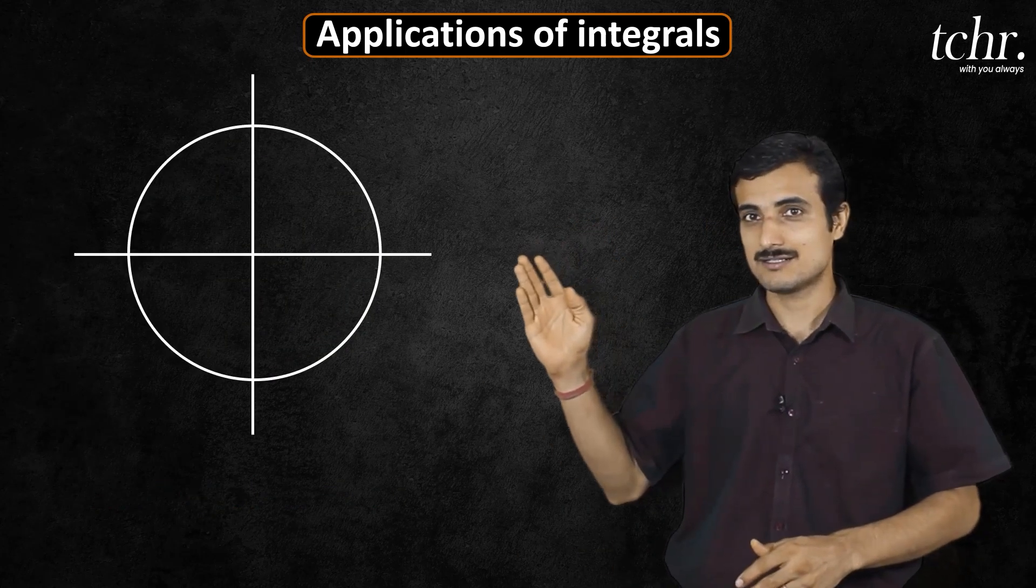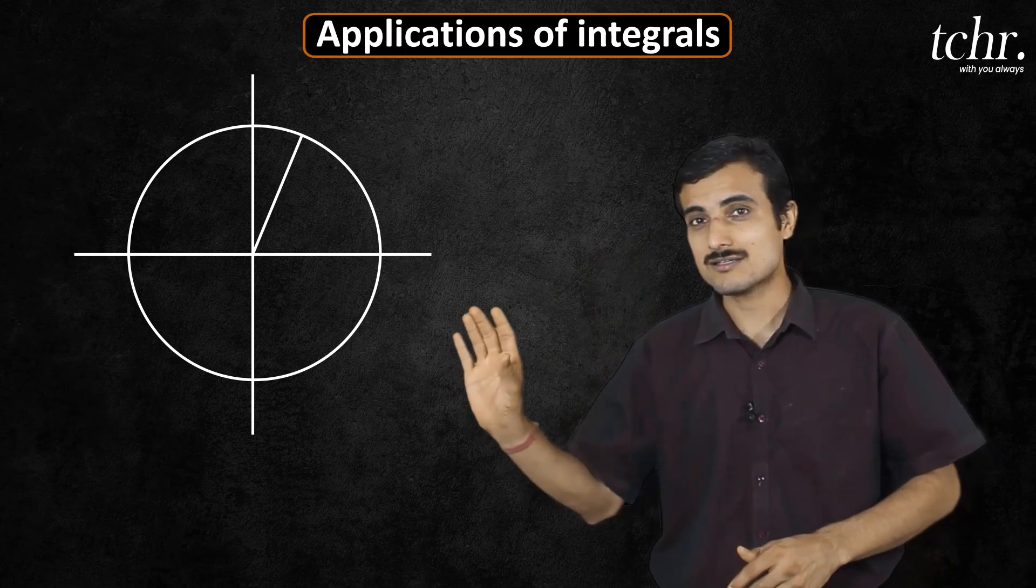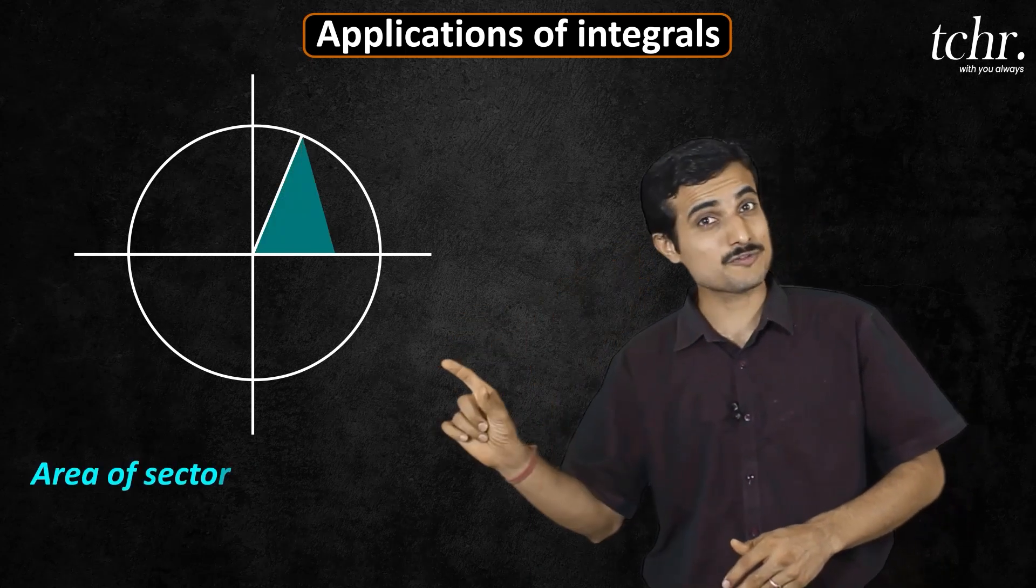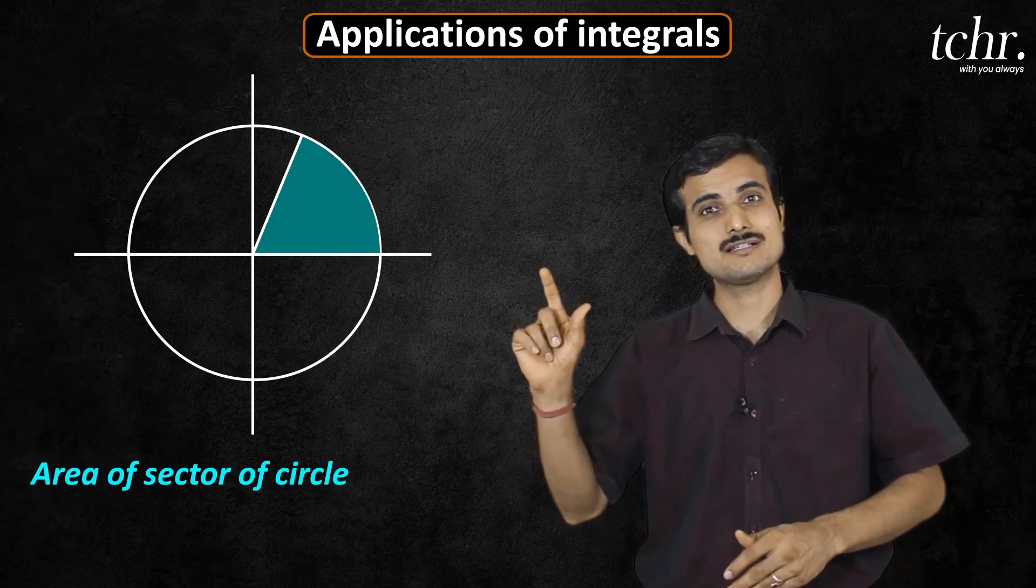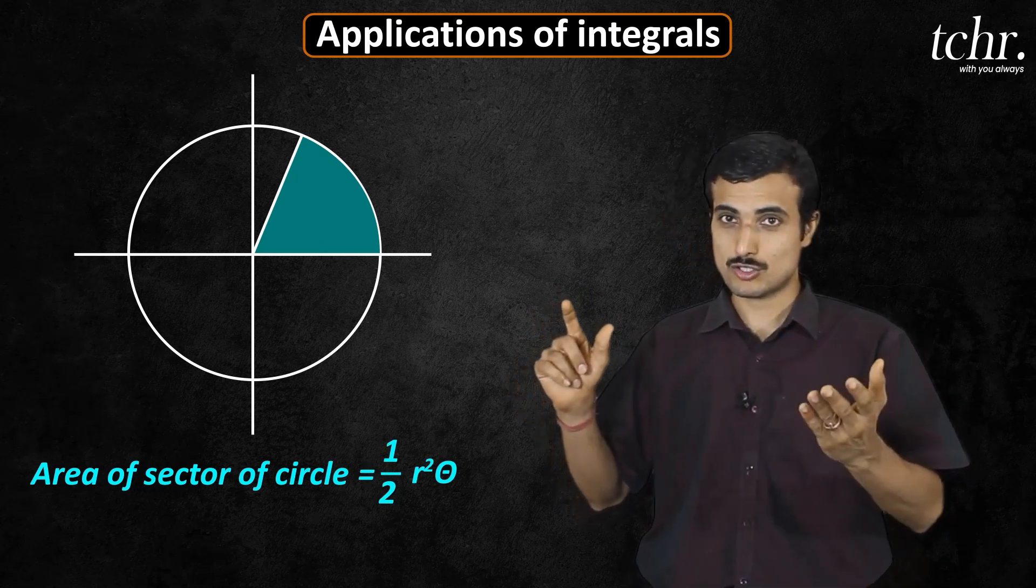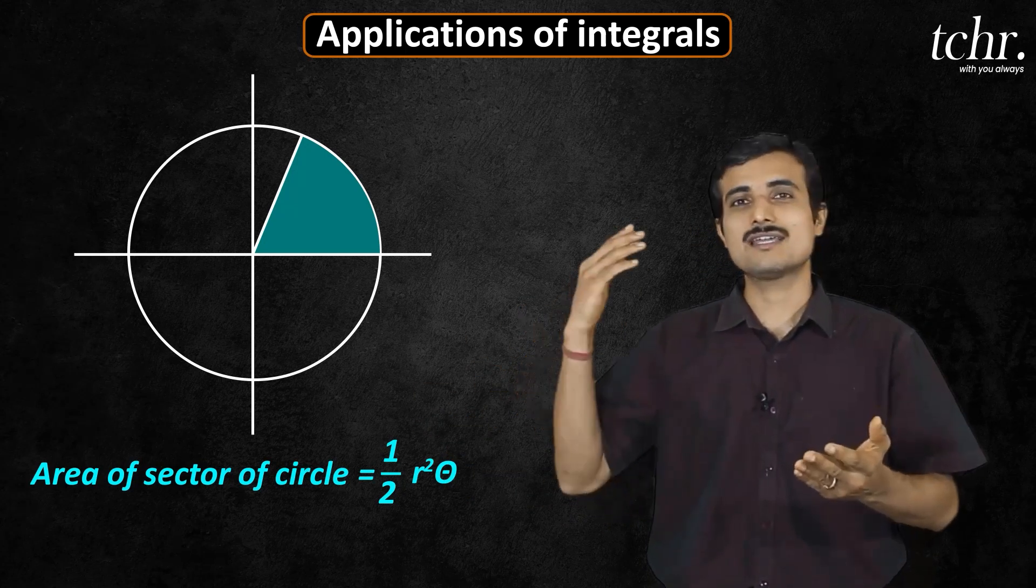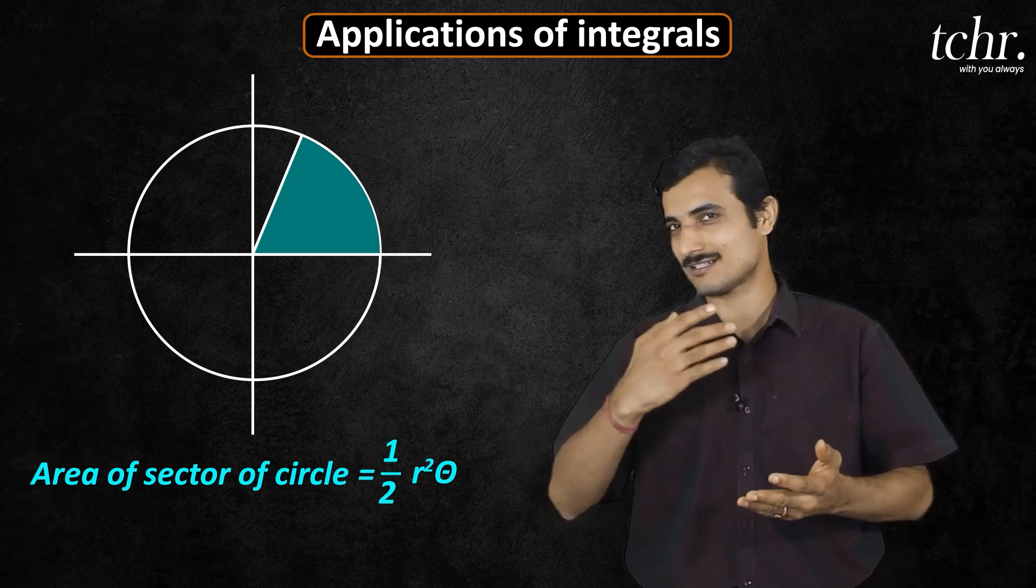Circle and sector: how do you find the area of the sector of the circle? Half into r square theta. So if you know the angle, you can easily find area of the sector of the circle.